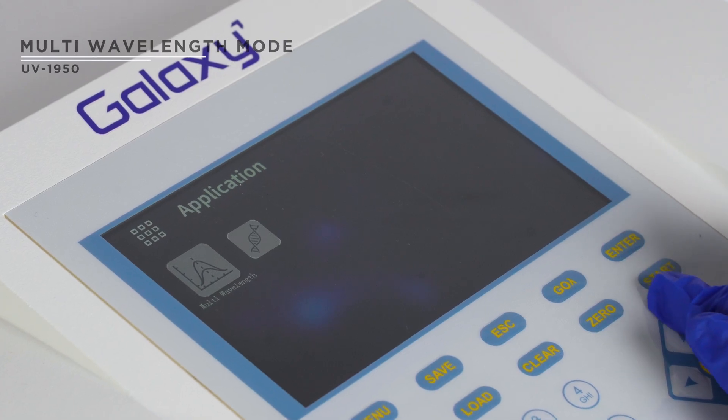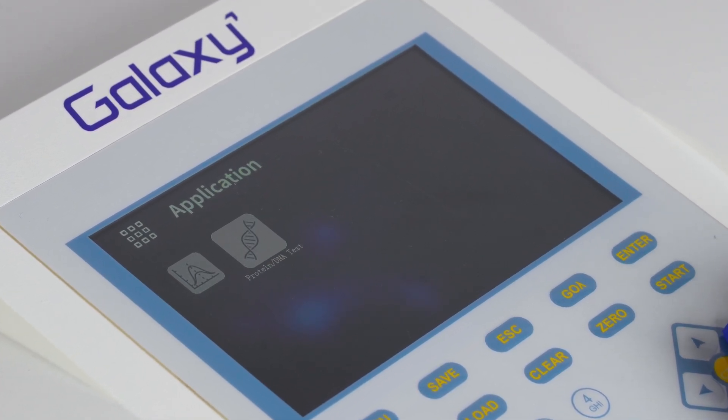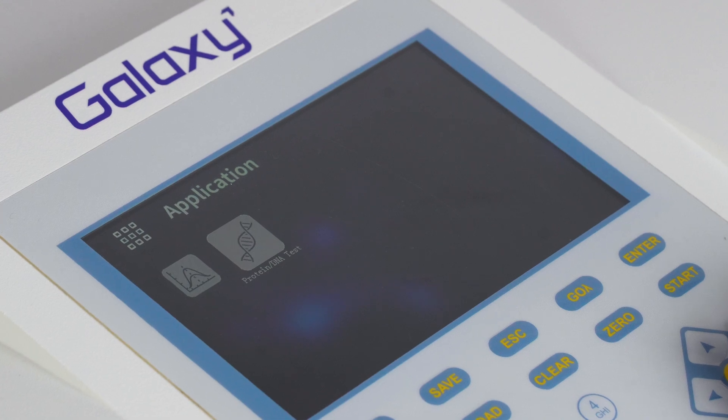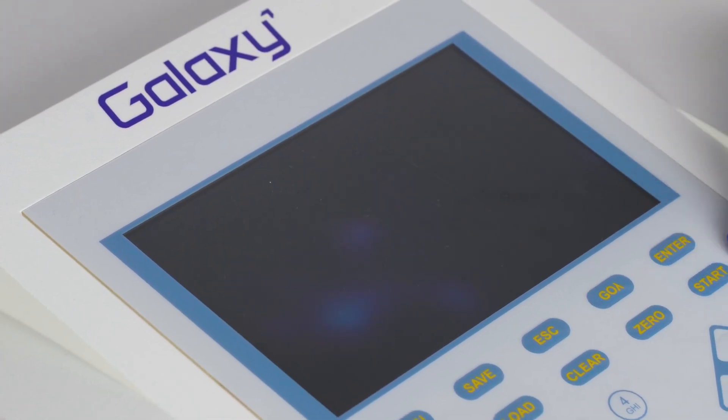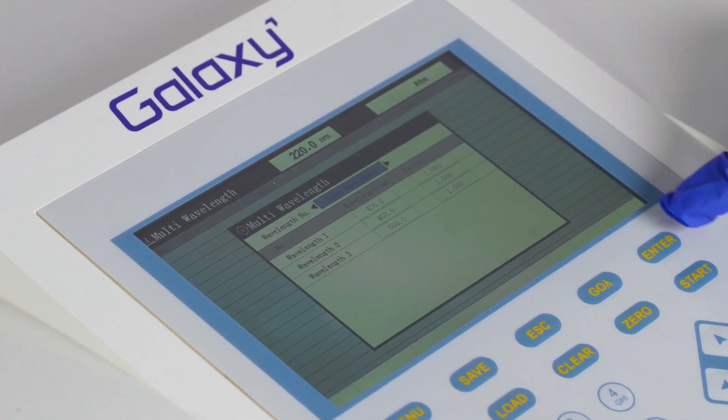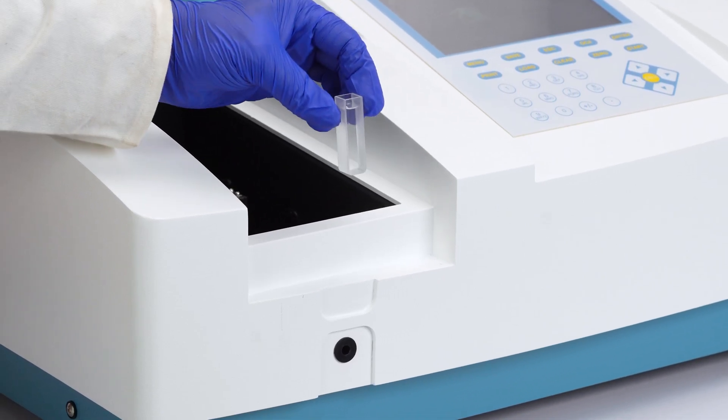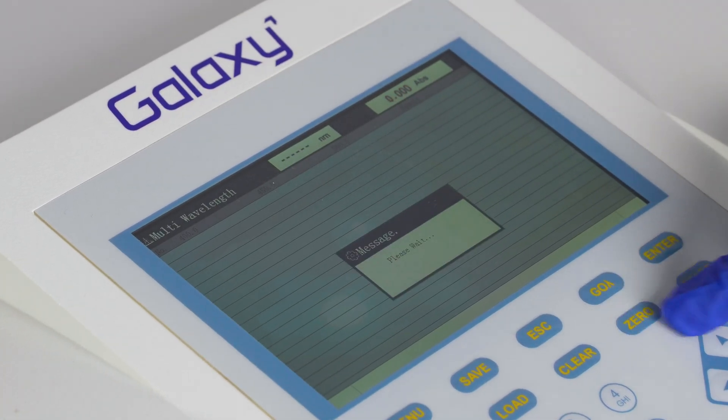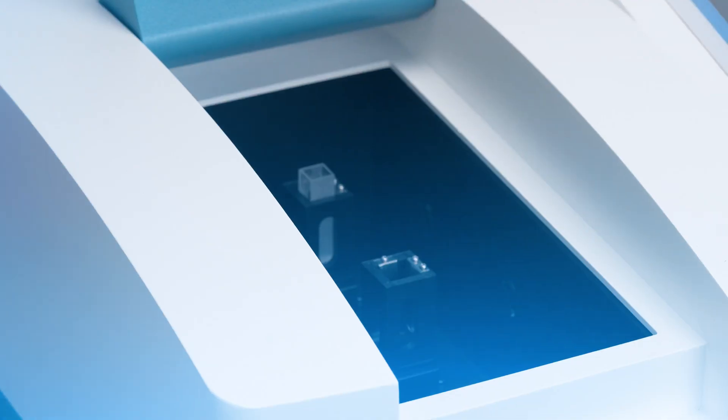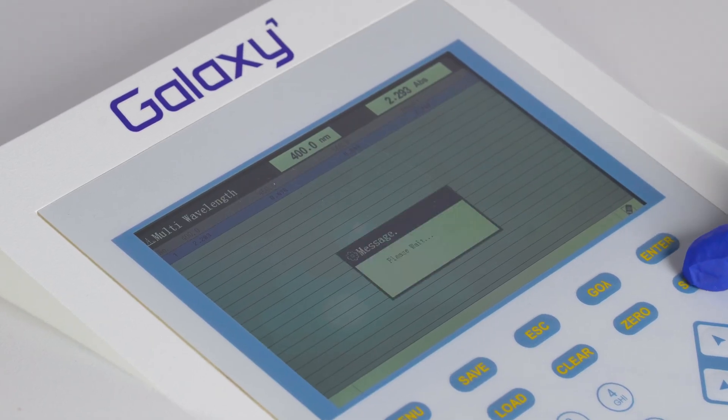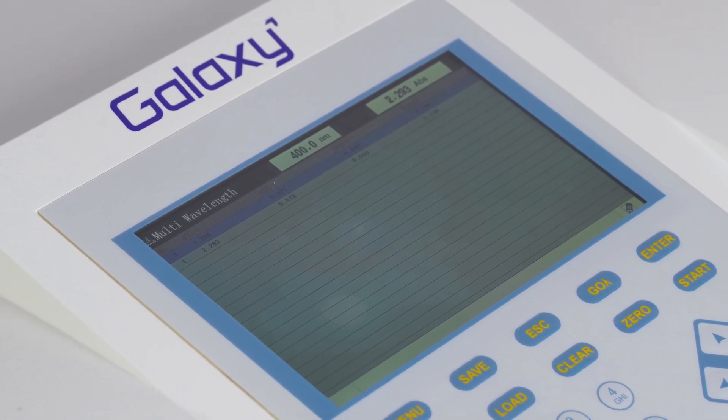The applications menu includes multi-wavelength and DNA and protein analysis. In multi-wavelength, enter the desired wavelengths. Place blanks in both holders and press zero for blanking. Insert the sample and press start to measure readings at multiple wavelengths.